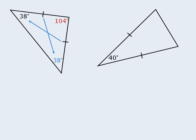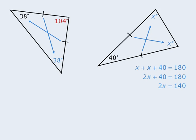Let's try one more. What are the two remaining angles here? The two angles opposite the two equal sides must be equal, so we will call both angles x for the moment. Since all three angles in this triangle must add to 180 degrees, we can write the equation x plus x plus 40 equals 180. To solve this equation for x, we will simplify the left-hand side, then subtract 40 from both sides, and then divide both sides by 2 to see that x is equal to 70. So the two other angles in this triangle are both equal to 70 degrees.